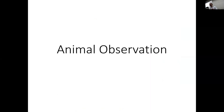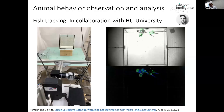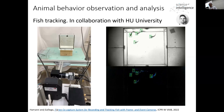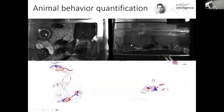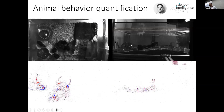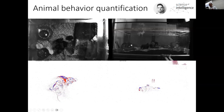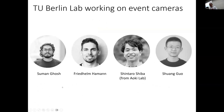The second main topic is animal observation, work of Friedhelm Hammann, part of the Science of Intelligence Excellence cluster in Berlin. We are trying to analyze natural intelligence, understand it, and replicate it with synthetic agents. We record with a co-capture system that has both frames and events, recording fish, mice, birds, and other animals. The first step is quantifying animal behavior — something Costas is also working on in the UPenn Aviary. I hope you have the chance to talk to the students from TU Berlin.